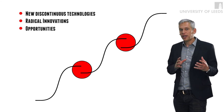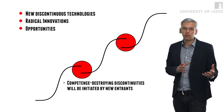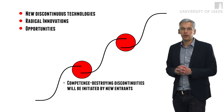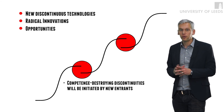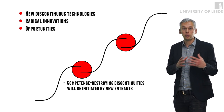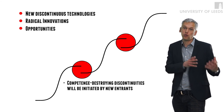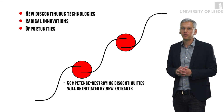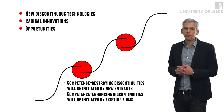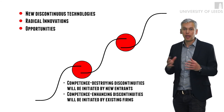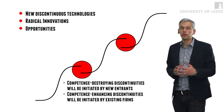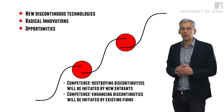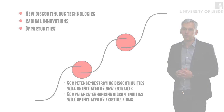These changes can be competence destroying — as we discussed in the disruptive technology context — where the new technology can disrupt the technology of the incumbent firm. Or it can be competence enhancing, where usually established companies introduce the discontinuous innovation, but this discontinuous innovation builds on the previous technology.